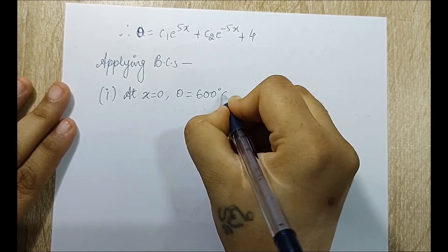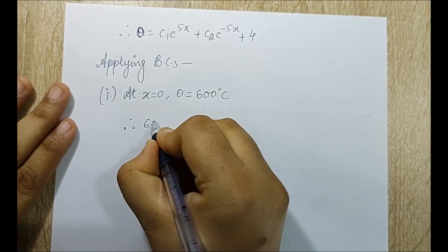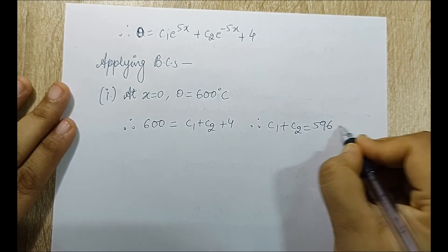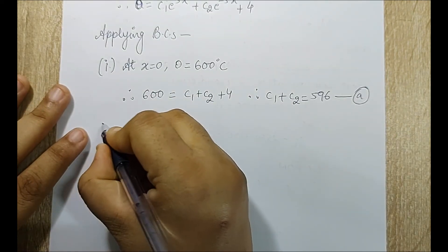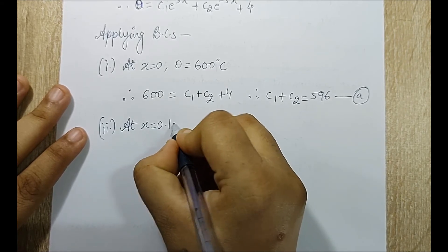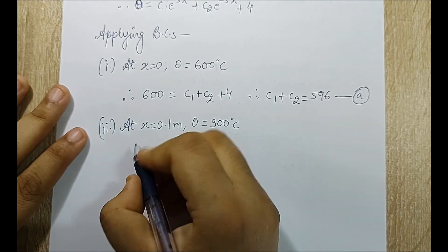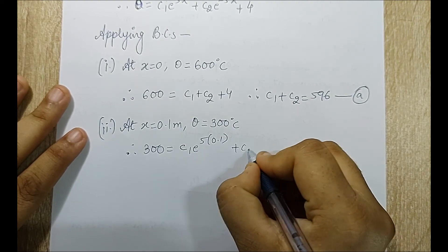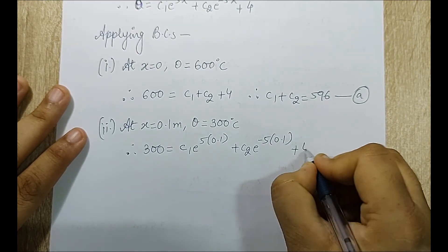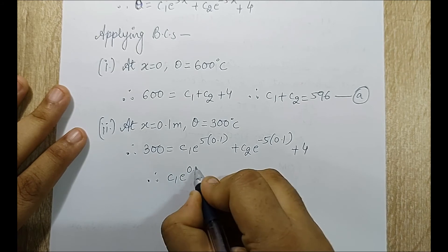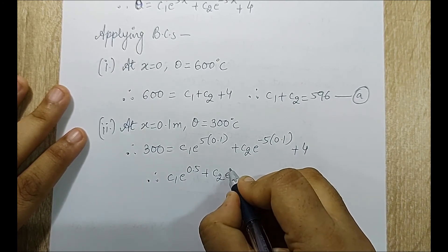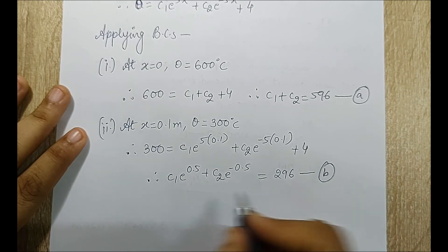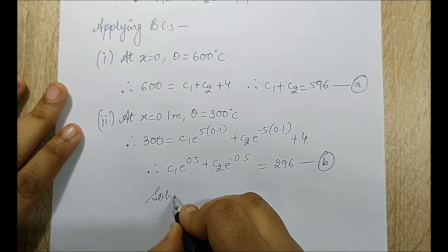Applying the first boundary condition: 600 equals C1 plus C2 plus 4, so C1 plus C2 equals 596. This is equation A. Applying the second boundary condition at x equals 0.1 meter, theta equals 300: 300 equals C1 e raised to 0.5 plus C2 e raised to minus 0.5 plus 4, giving C1 e raised to 0.5 plus C2 e raised to minus 0.5 equals 296, marked equation B. Solving equations A and B simultaneously gives C1 and C2.